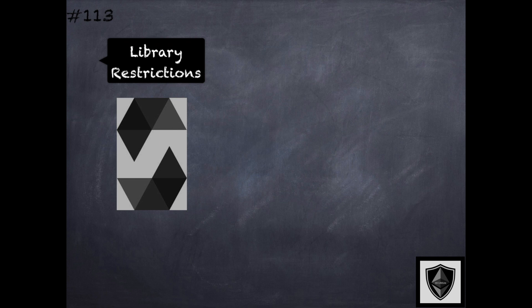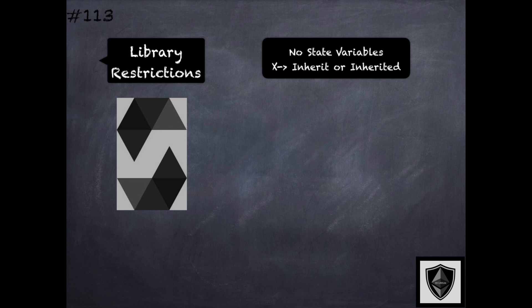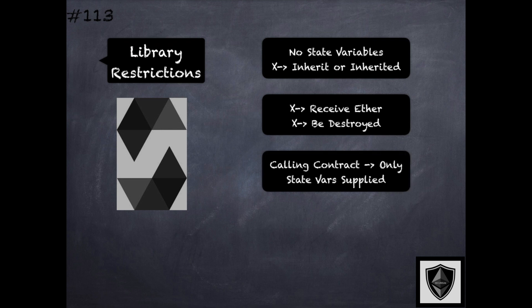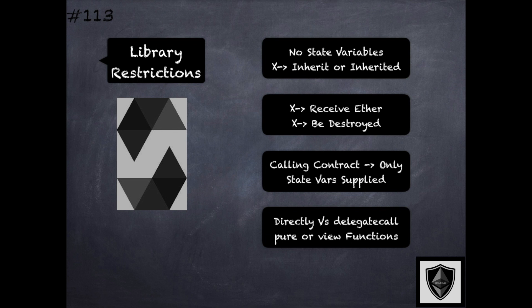Libraries have several restrictions compared to typical contracts. Libraries cannot have state variables. They cannot inherit from other classes or be inherited themselves. They cannot receive ether. They cannot be destroyed. They have access to state variables of the calling contract only if they are explicitly supplied. And library functions can only be called directly without the use of delegate call if they do not modify the state — that is, if they are view or pure functions — because libraries are assumed to be stateless by default.